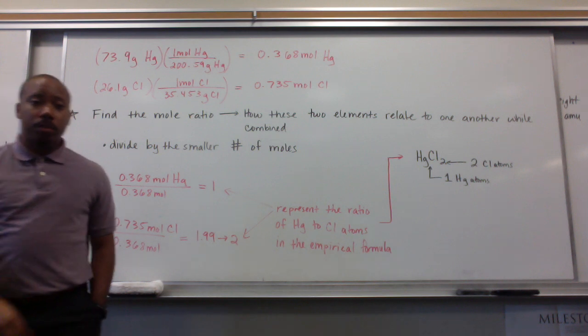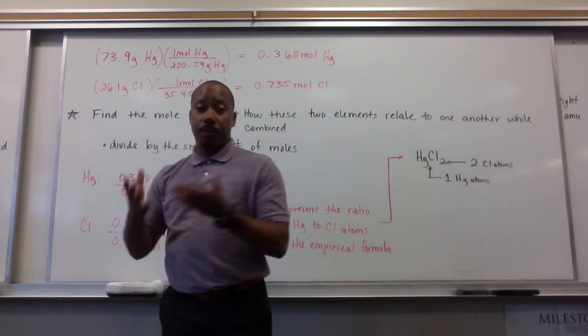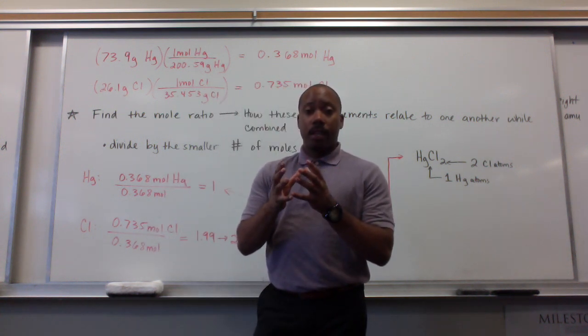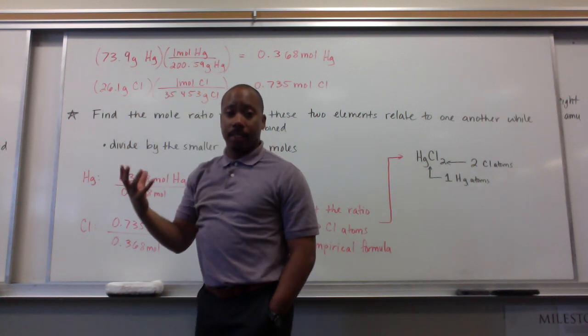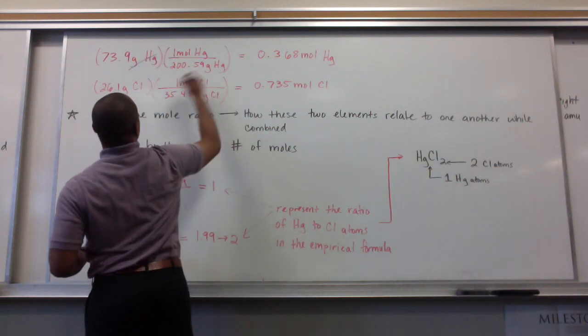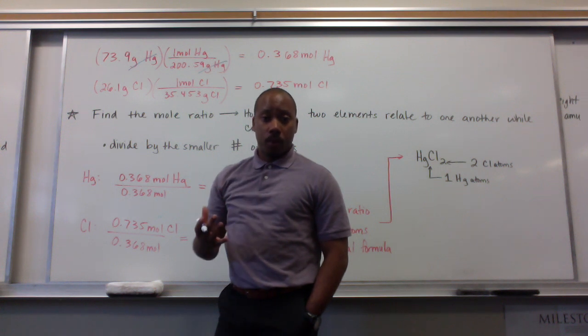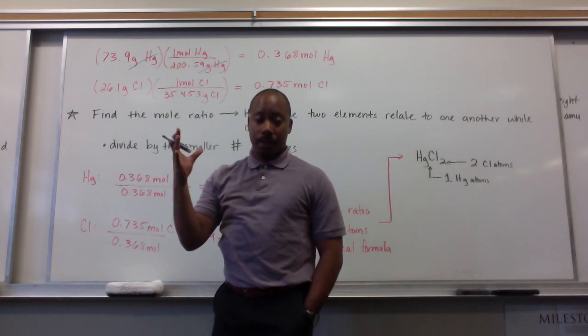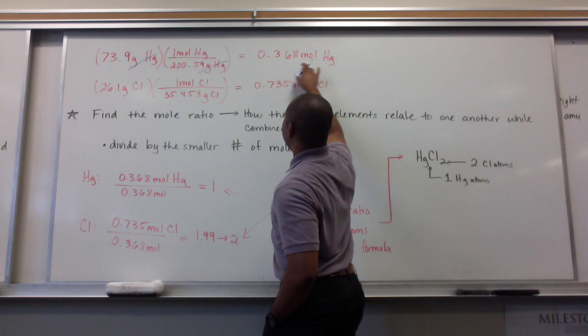So, I first start out with using my masses of my substances. If I assume a 100-gram sample, then if I have 50% of one substance, then that's going to be 50 grams. Likewise, if I have 73.9% of mercury in my compound, then in a 100-gram sample, I'm going to have 73.9 grams of mercury. I want to figure out how many moles of mercury I have in that sample, so I use the molar mass to convert between grams and moles. The molar mass of mercury is 200.59 grams per one mole. If I do this mathematics, I get 0.368 moles of mercury.